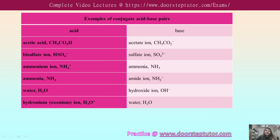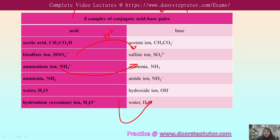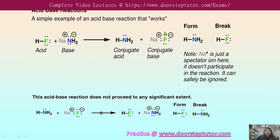Each acid-base pair is depicted in a table. For example, HSO4⁻ converts to SO4²⁻ by removing H+. Going from acid to base, you simply remove H+. Ammonium ion converts to ammonia; water converts to hydroxide; and hydronium ion converts to water. As you get familiar with these reactions you will be able to solve questions on this topic.